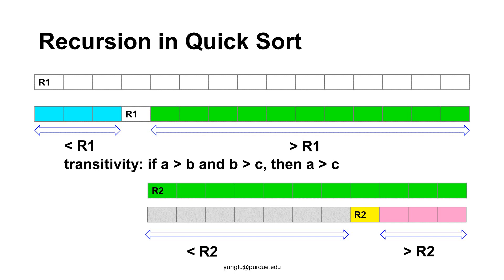Then, the QuickSort algorithm sorts the first and third parts separately. For the part greater than R1, the algorithm finds another reference called R2, and this part is divided into three parts: the part smaller than R2, R2 itself, and the part greater than R2. QuickSort is a recursive algorithm and it is fast — it is widely used for sorting. We will study the QuickSort algorithm in more detail later.